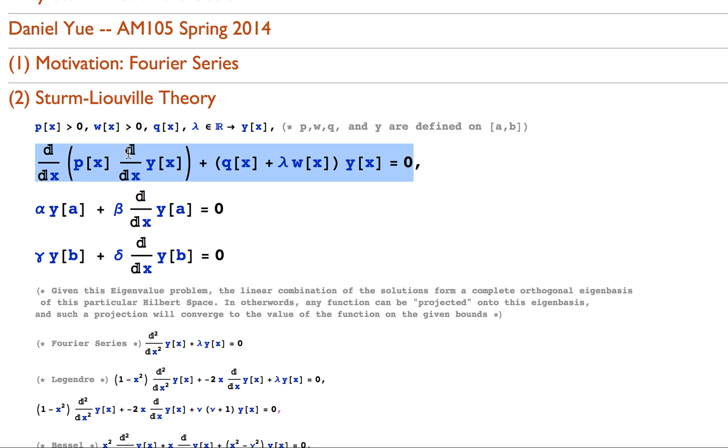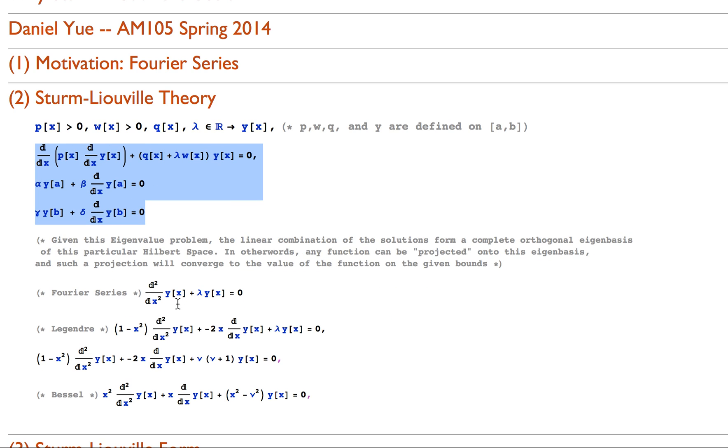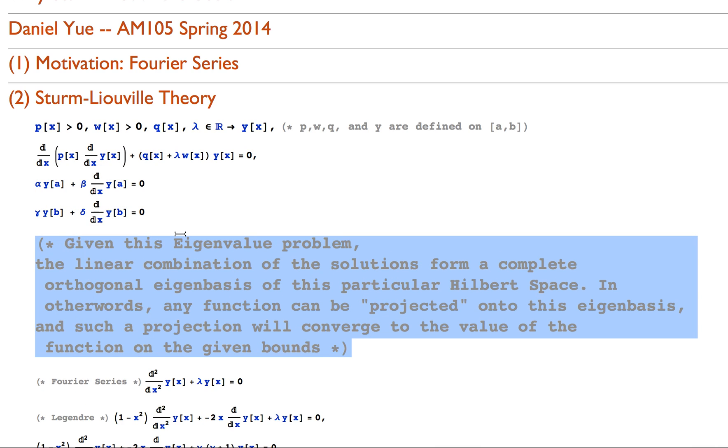Any equation that we can put into a form similar to this has solutions with real eigenvalues, and any of the eigenvalues, the whole basis of eigenvalues is actually an orthonormal basis for the interval from a to b. Any function that is projected onto this orthonormal eigenbasis on the interval from a to b, it's a Hilbert space. Any function that's projected onto it, given that you projected onto an infinite number of the eigenfunctions, it will converge to the value of the function.